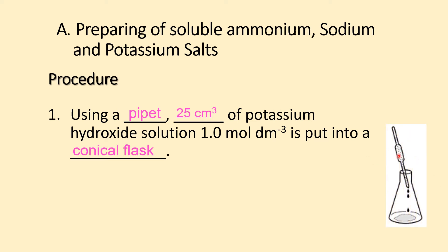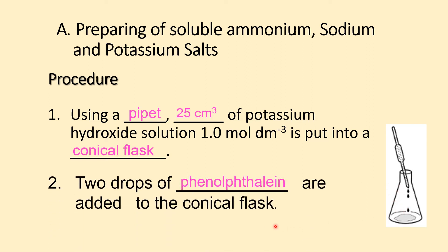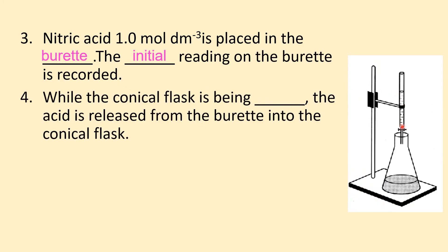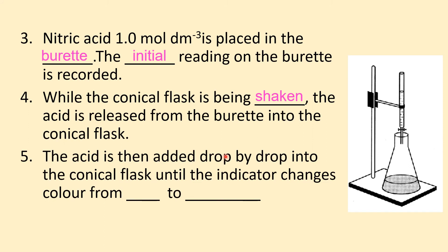The pipette draws 25 cm³ from the reagent bottle and puts it into the conical flask. Drops of phenolphthalein — remember the spelling — are added into the conical flask. Dilute nitric acid at 1 mol per dm³ is placed in the burette; the initial reading is recorded. While the conical flask is shaken, acid is released drop by drop from the burette until the indicator changes color from pink to colorless.